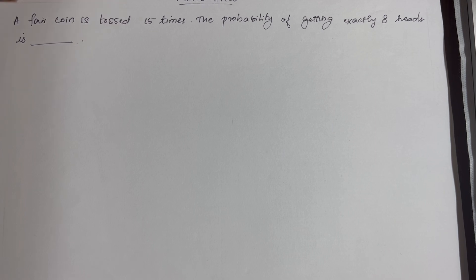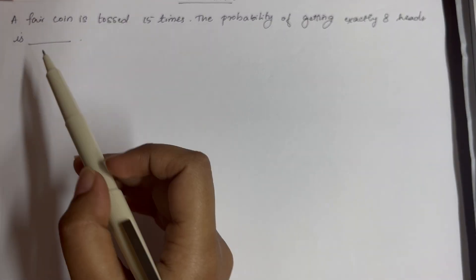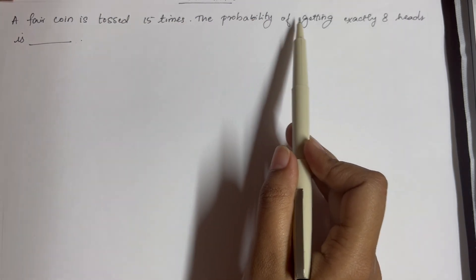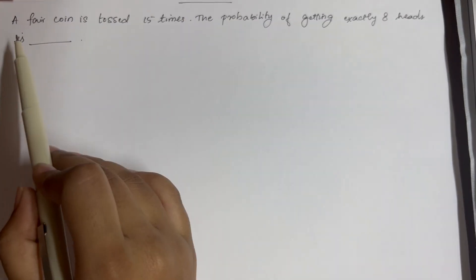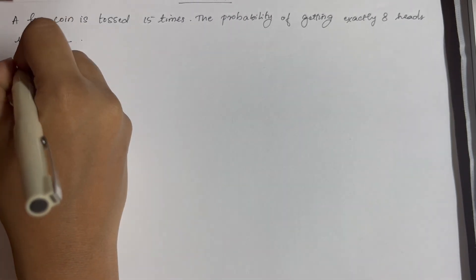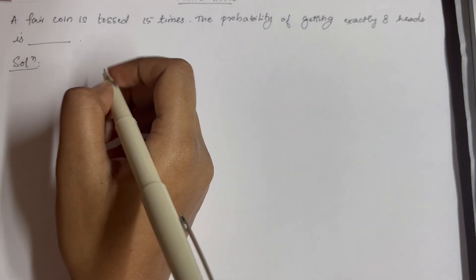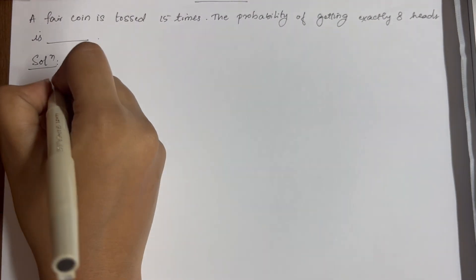Today let us solve a question from probability. The question says a fair coin is tossed 15 times. The probability of getting exactly 8 heads is... So let us take down the data which are given.